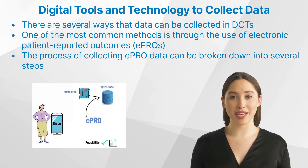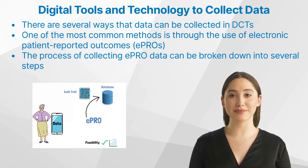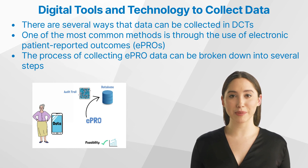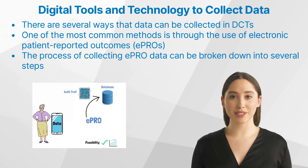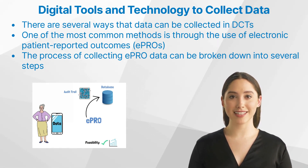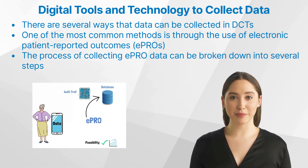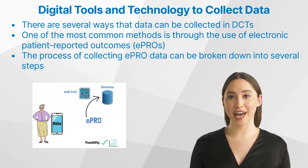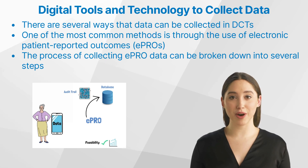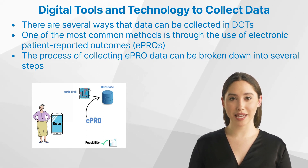There are several ways that data can be collected in decentralized clinical trials. One of the most common methods is through the use of electronic patient-reported outcomes. ePROs are self-reported questionnaires that can be completed online or through a mobile app. First, the study participant receives a notification on their mobile device or computer to complete a questionnaire. Then, the participant clicks on the notification and is taken to the ePRO platform, where they complete the questionnaire, which may include questions about their symptoms, quality of life, or medication adherence. The data is automatically stored in the study database, where it can be accessed by the study team.